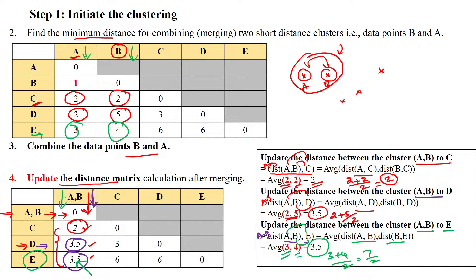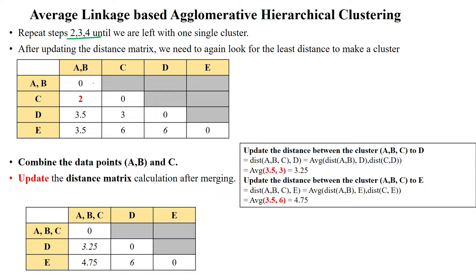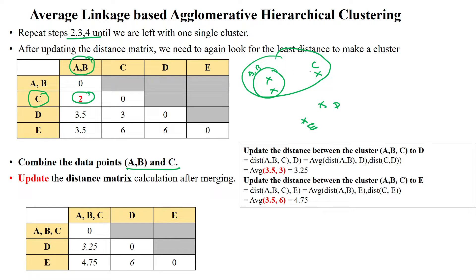After updating the (a,b) row and column, we check for the minimum value in the table. The minimum value is 2, corresponding to (a,b) and c. We repeat the process and combine the already-clustered (a,b) with c, merging cluster (a,b) and cluster c into a new cluster (a,b,c).